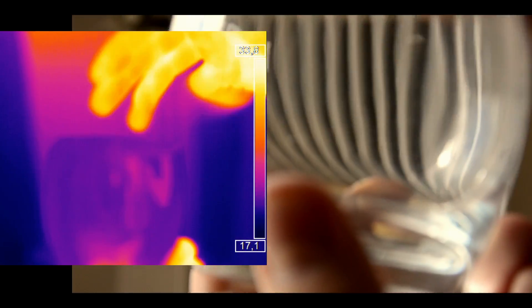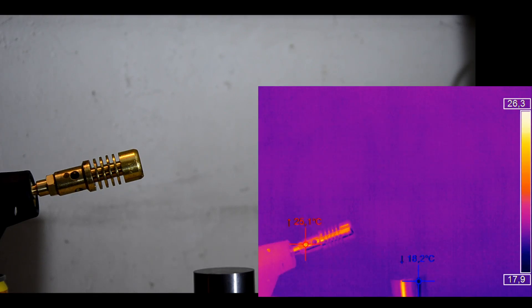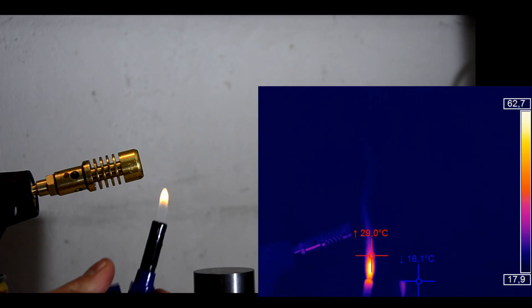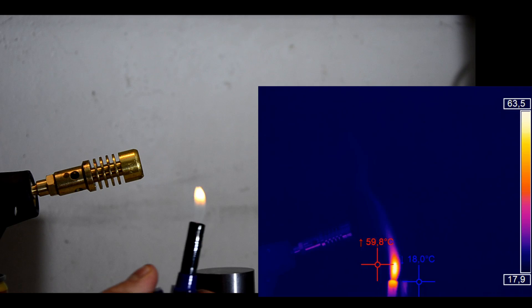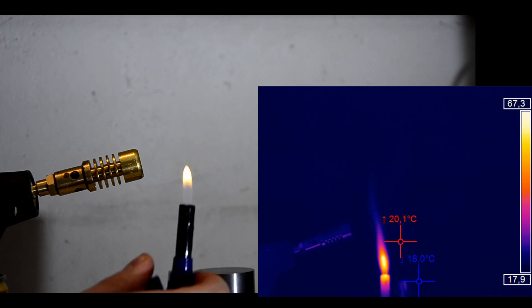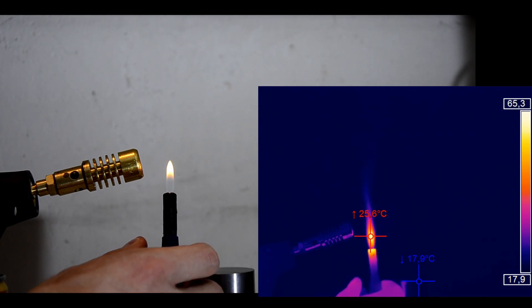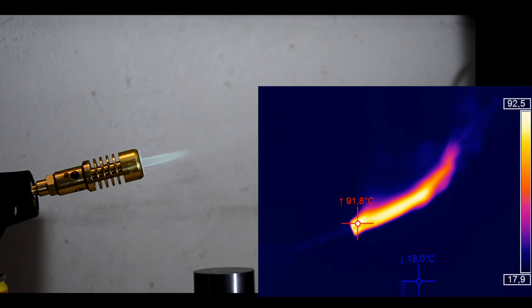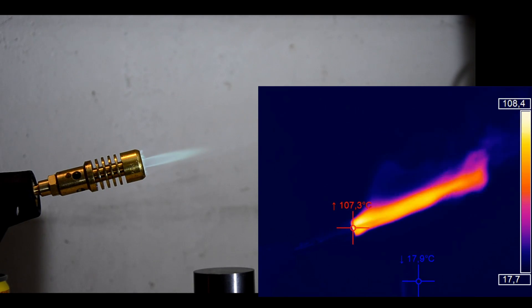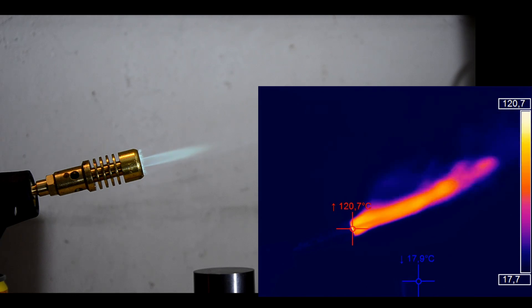And now, to show you a few traps and false interpretations of the thermal image, I will make an easy experiment. Here I have a lighter. You can clearly see the flame and also the hot air rising. When I turn on the torch, you can see the same. But look at the temperature reading. Barely over 100 degrees C. About the temperature of a normal hairdryer.